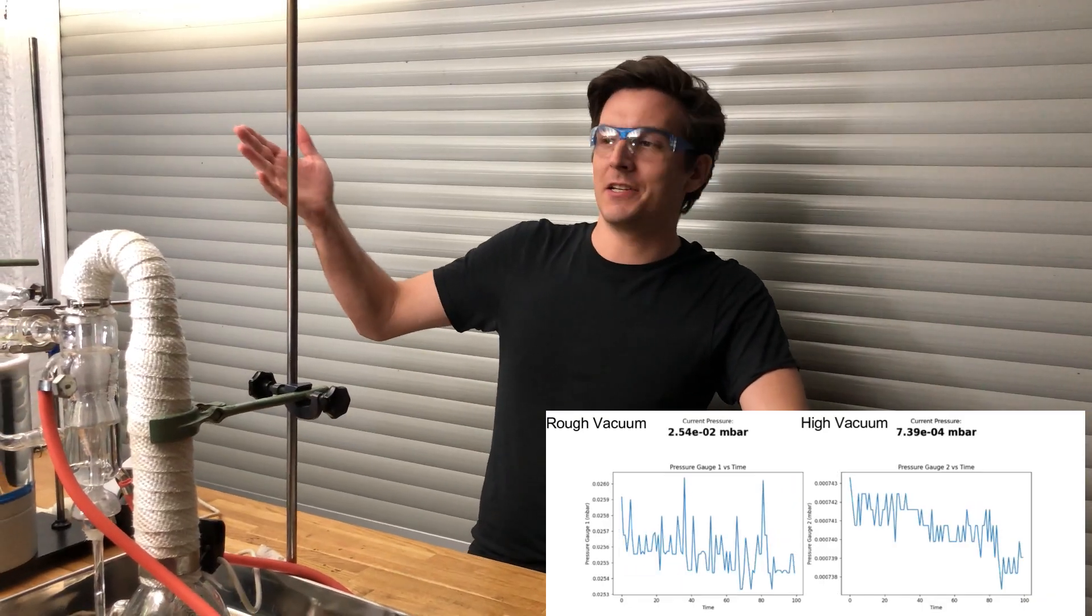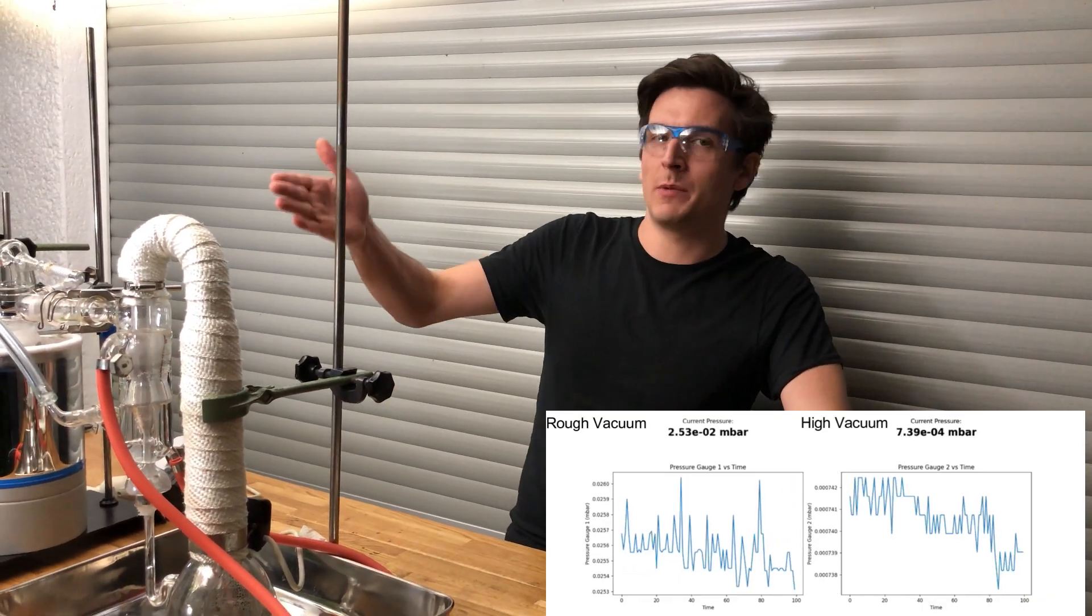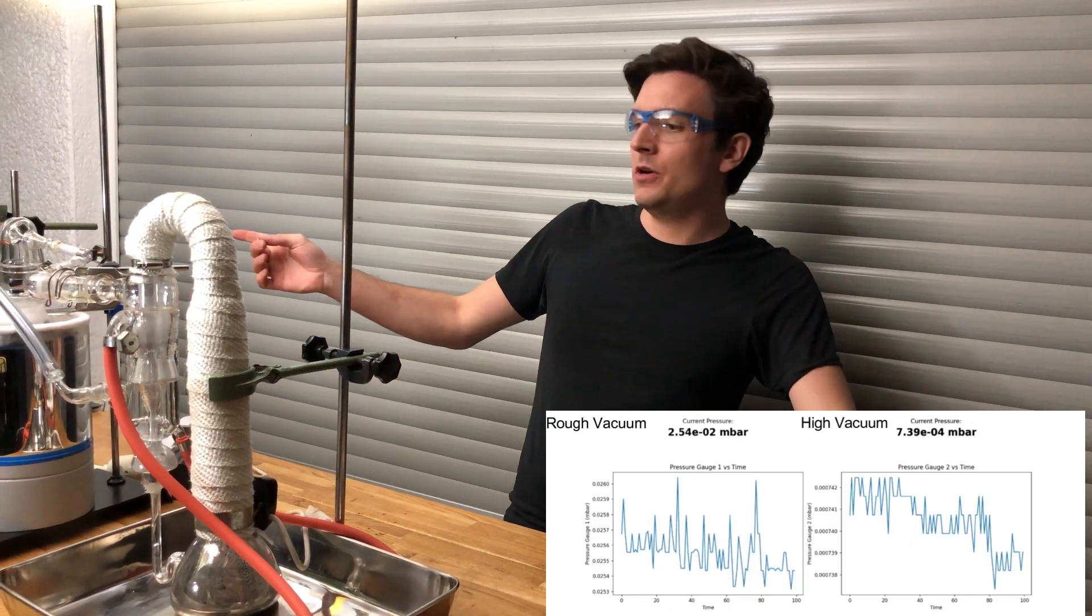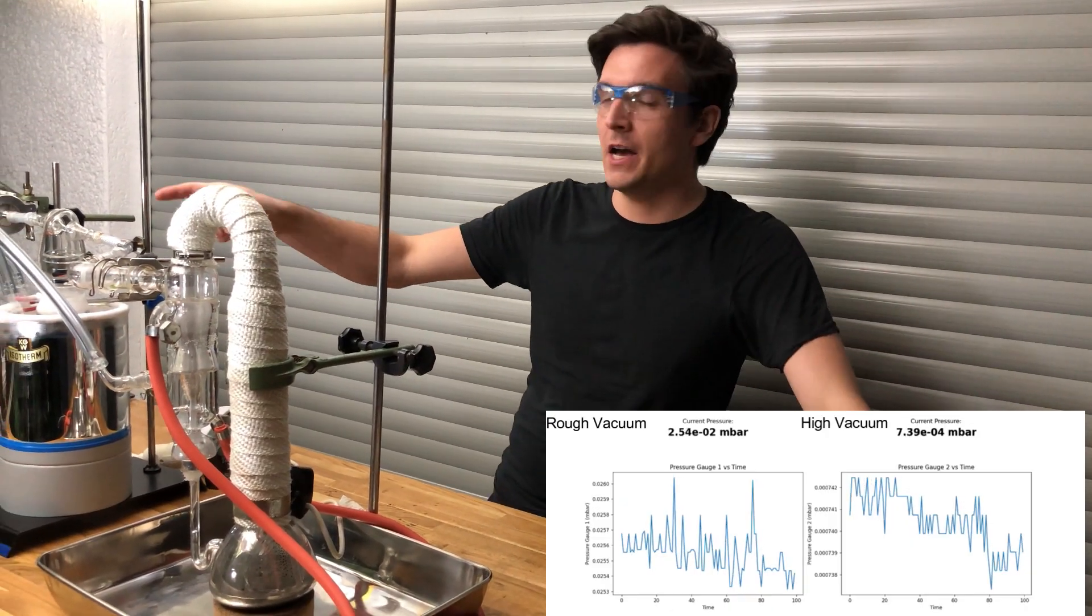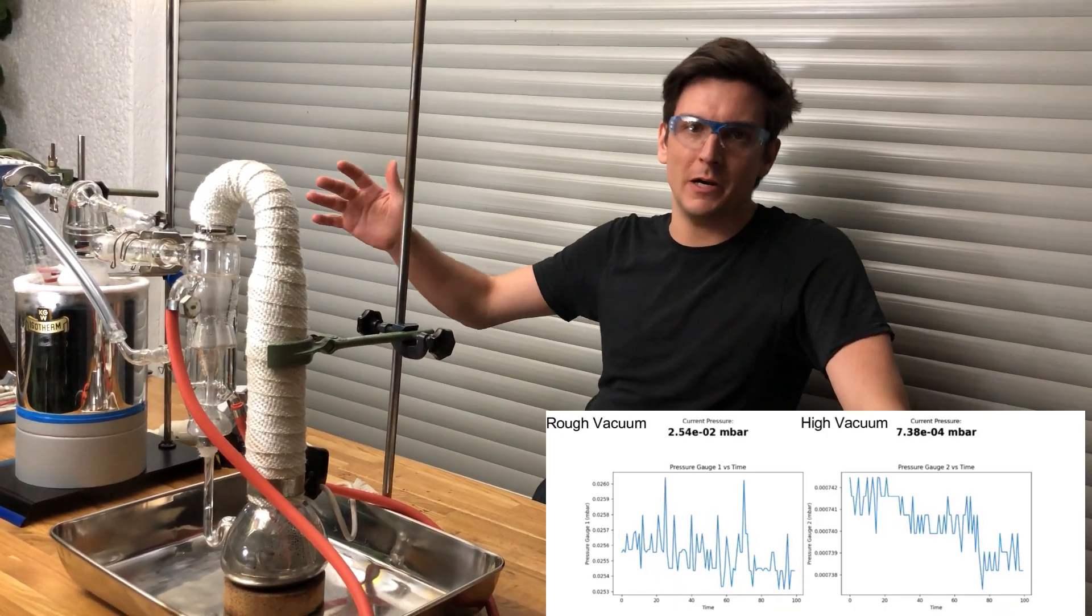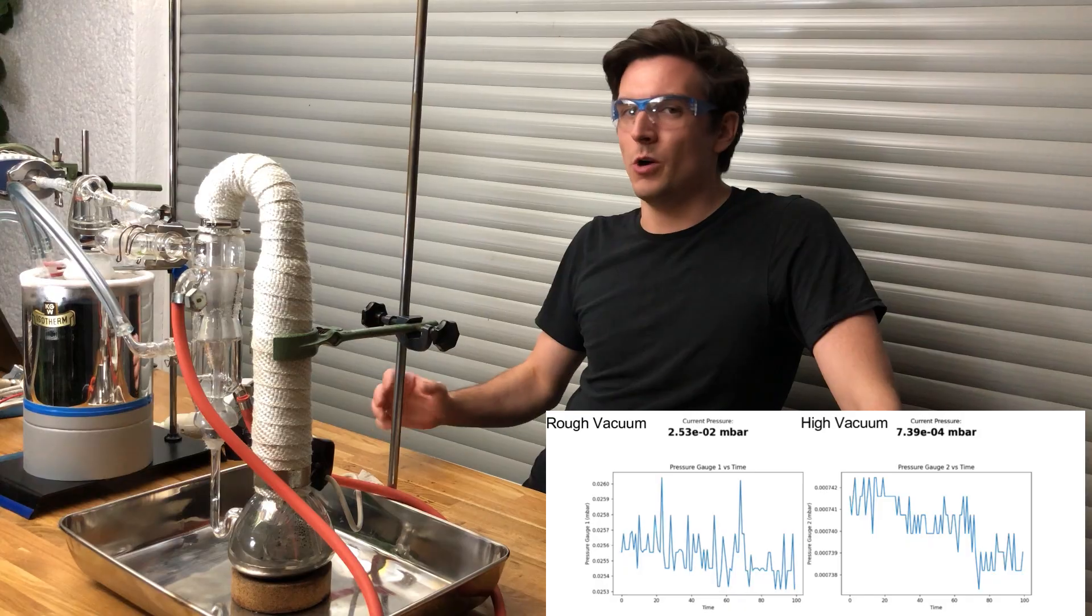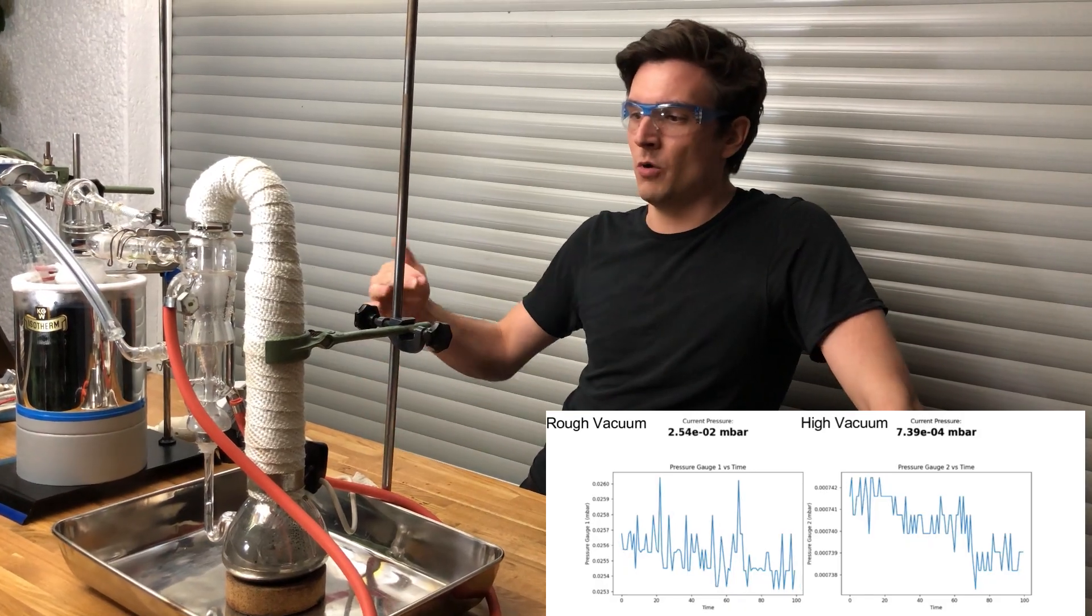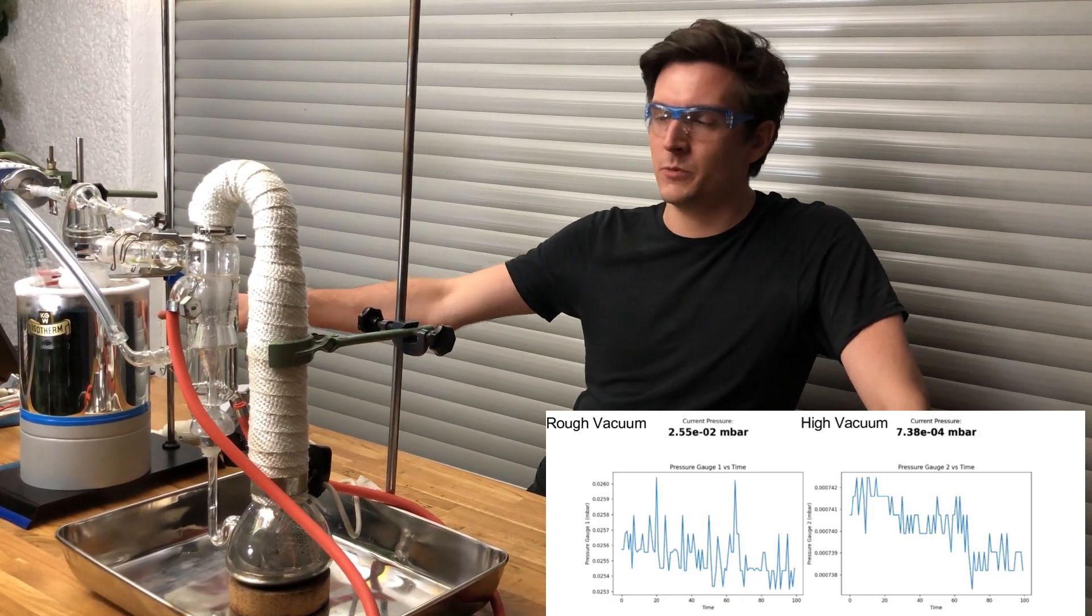As you see it's gotten dark here but we've put up some lights. Right now we've reached a pressure at the high vacuum site of 7.4 times 10 to the power of minus 4 millibar. That's not quite two orders of magnitude lower than the rough vacuum site.